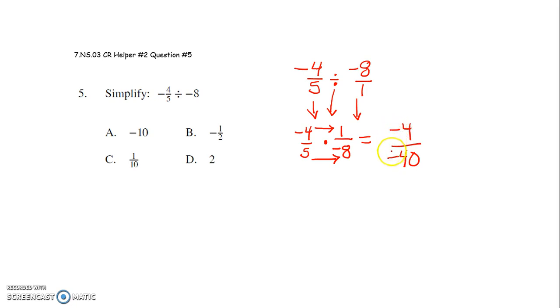Alright. Negative, this operation means divided by. Negative divided by a negative is a positive. So this is a positive, and then I still have 4 over 40.